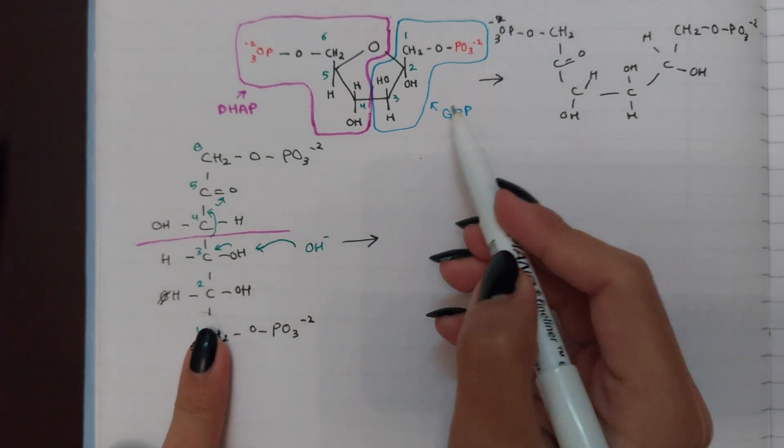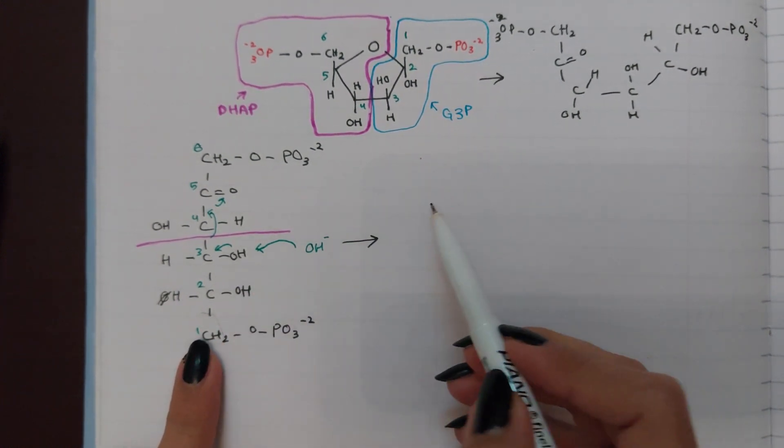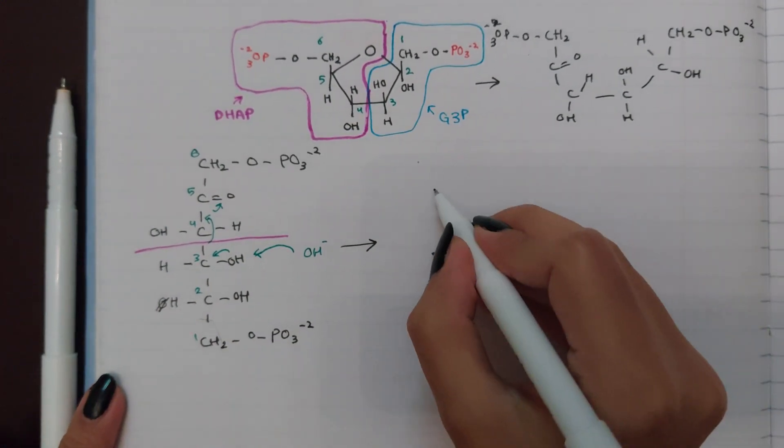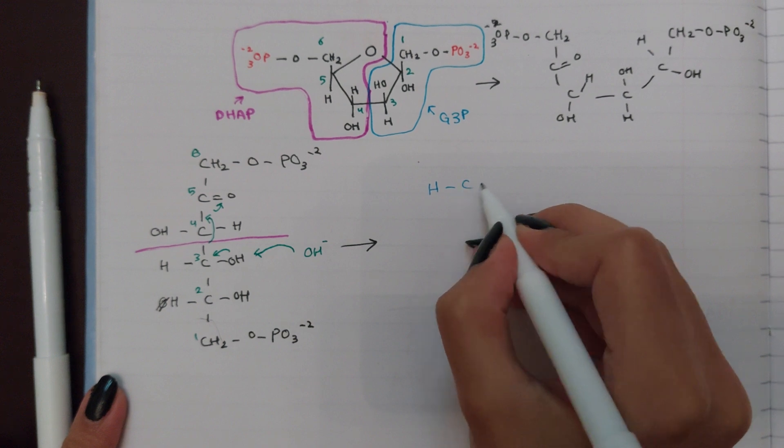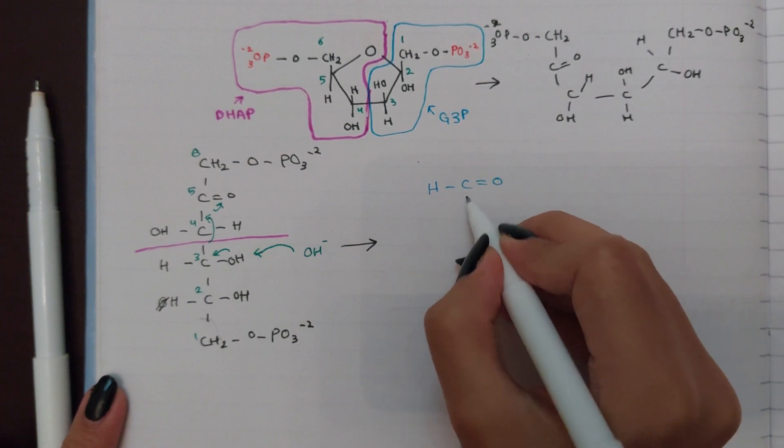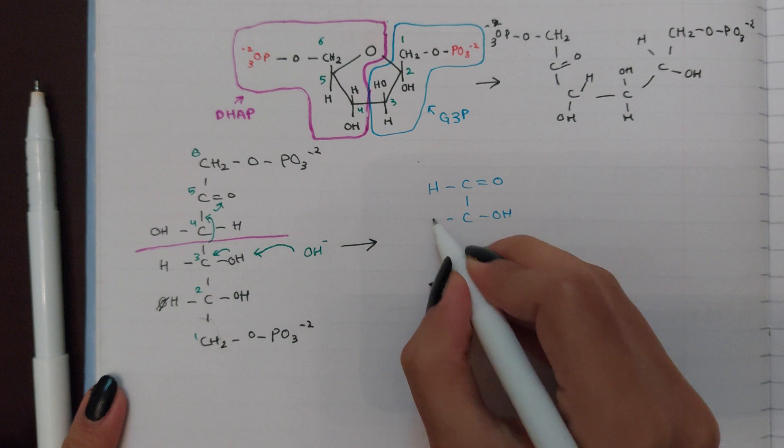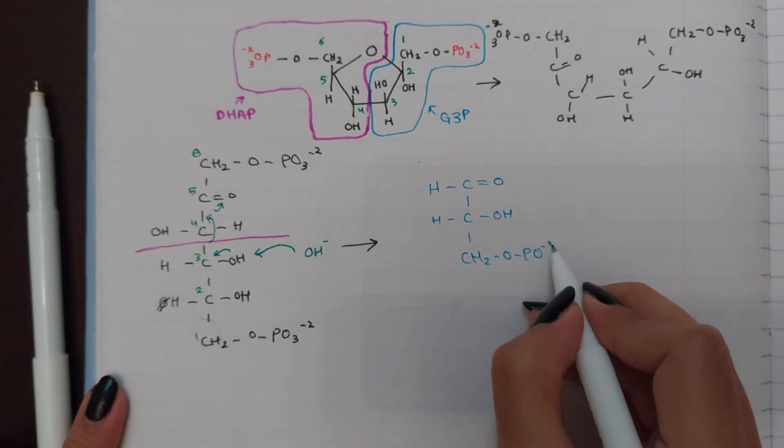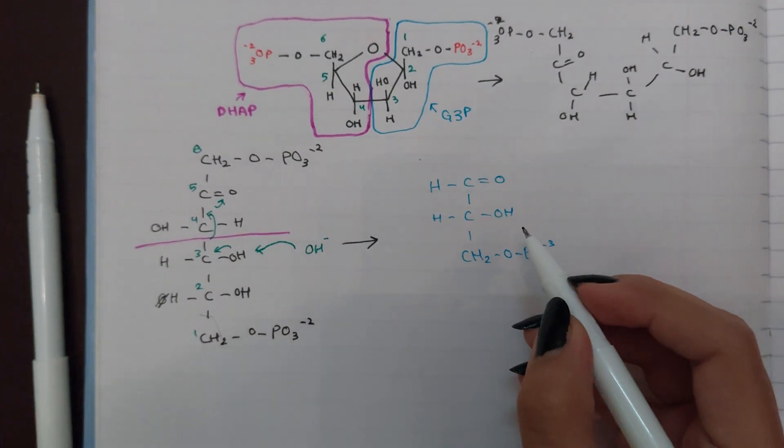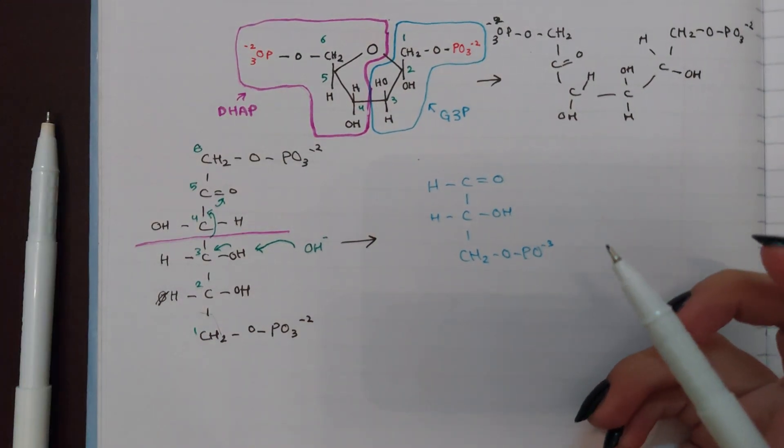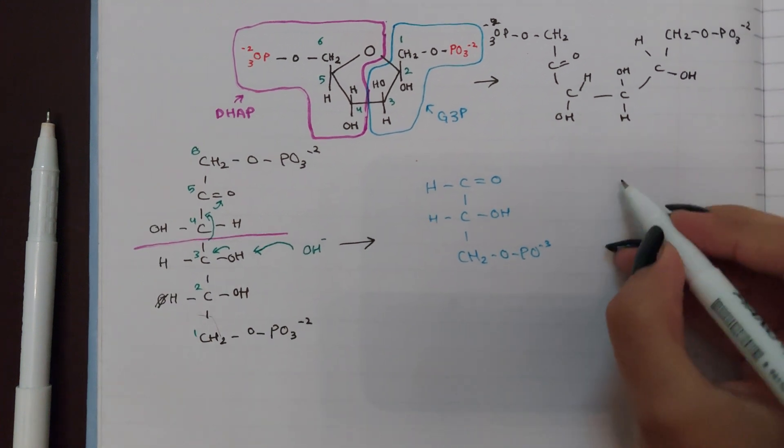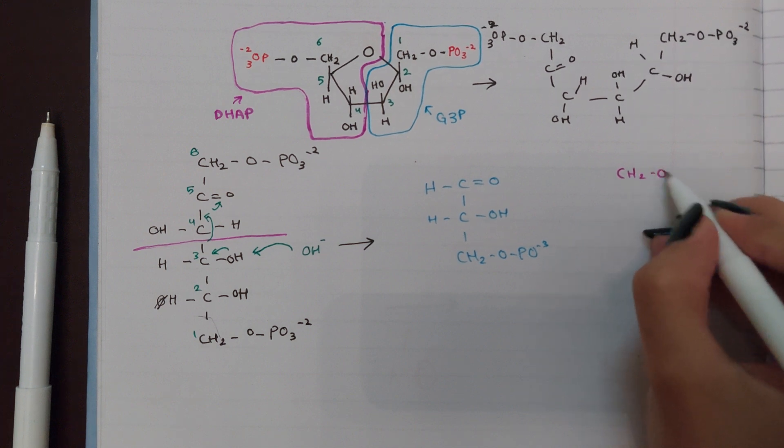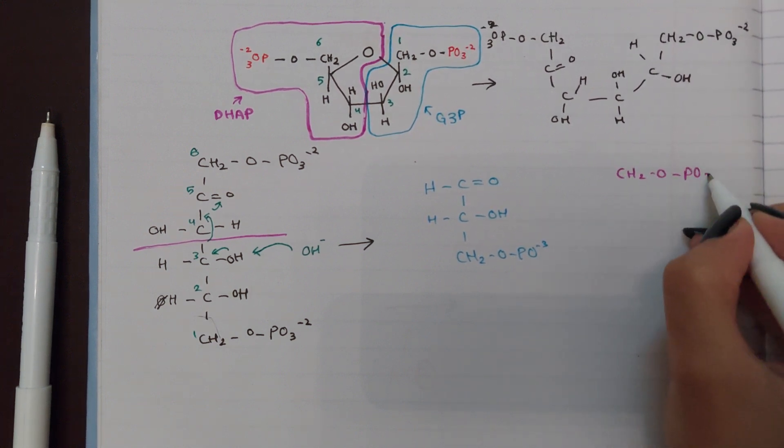Since this is the glyceraldehyde 3-phosphate, I would write it with my blue pen, and the other compound I'm gonna write with my purple pen.